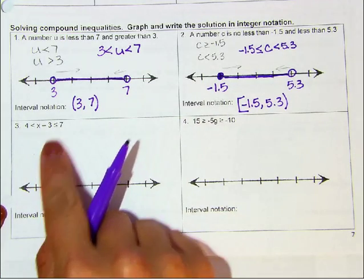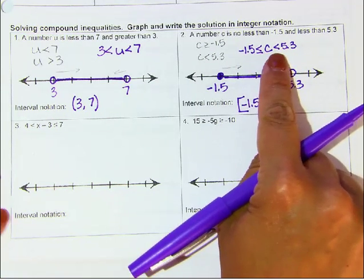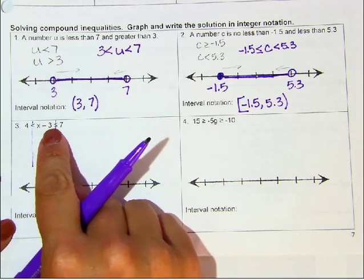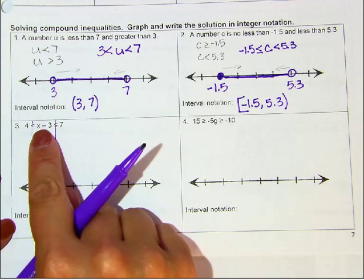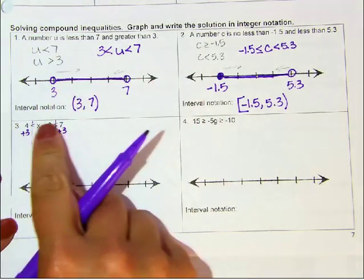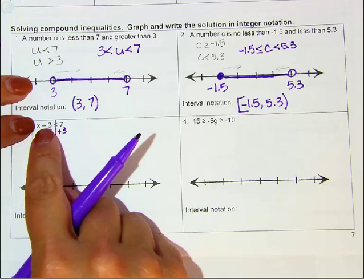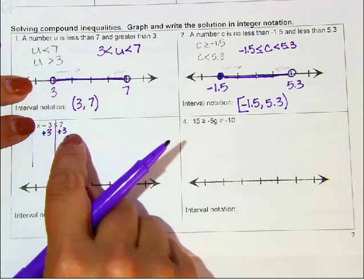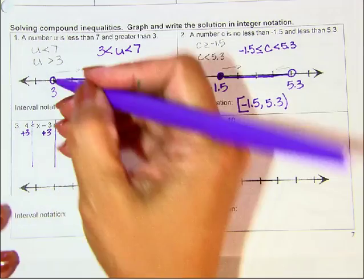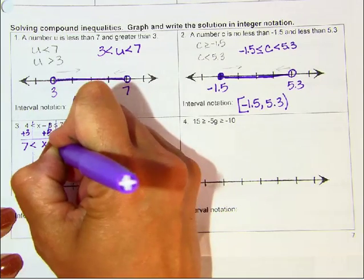Coming down to number 4, it's already written in compound inequality notation. I draw my lines like before when we just had an inequality, so now I have two lines. X is not by itself in the center and I want it by itself, so I'm going to add 3 to all three parts. That gives me 7 — the symbol stays the same — those cancel so I'm left with X — the symbol stays the same — and I have 10.